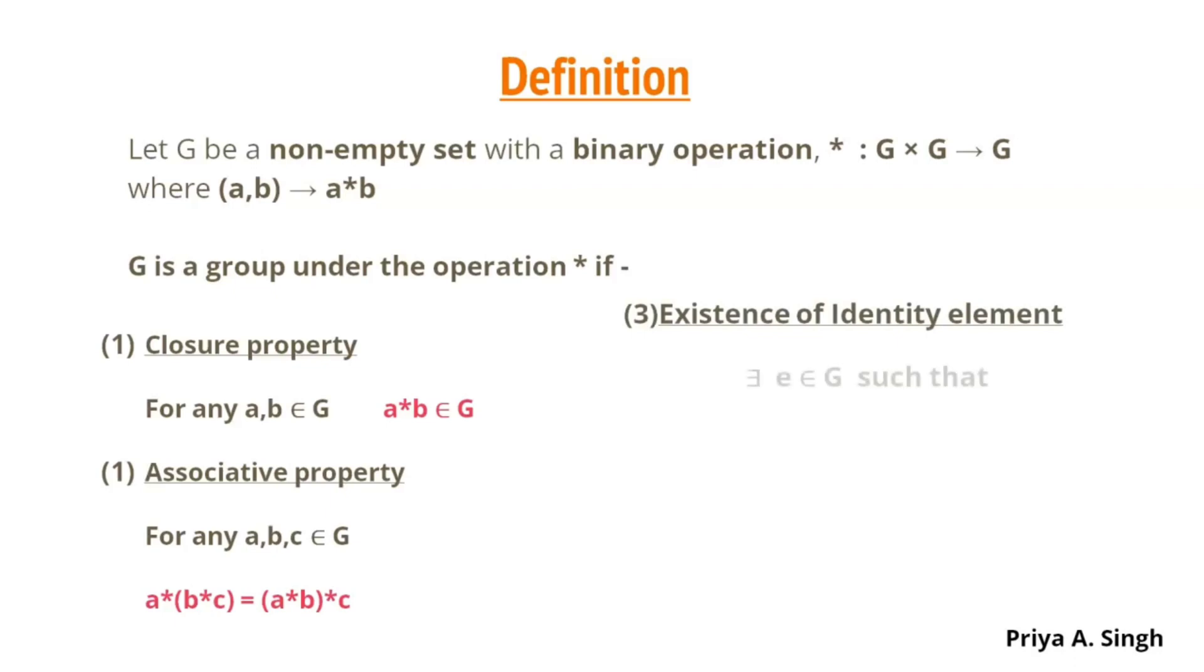Existence of identity element. There exists a unique element E in G such that A star E is equal to E star A, which is equal to A.